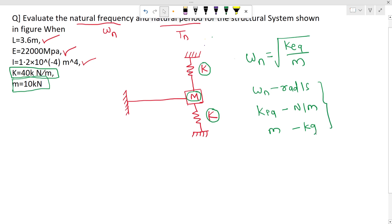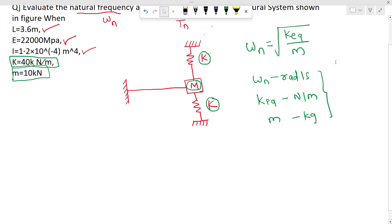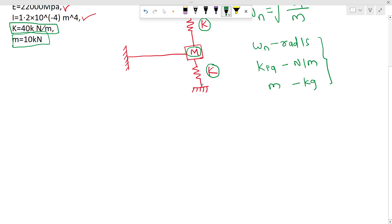Now if you see our system, there is one cantilever beam and two springs. So we need to identify whether our system is having parallel connection or series connection, or it is having some combination of parallel and series.